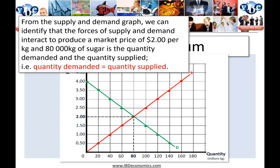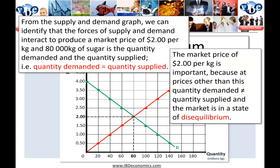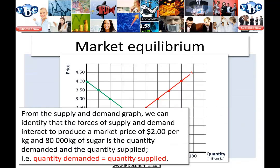From the supply and demand graph, we can identify that the forces of supply and demand interact to produce a market price for this good — two dollars per kg. At that two dollars per kg, 80,000 kilograms of sugar is both the quantity demanded and the quantity supplied. That's important because at prices other than this, quantity demanded is not going to equal quantity supplied. At a different price to two dollars, the market will be in a state of disequilibrium — quantity supplied does not equal quantity demanded. Quantity supplied may be greater, or quantity demanded may be greater at different prices.